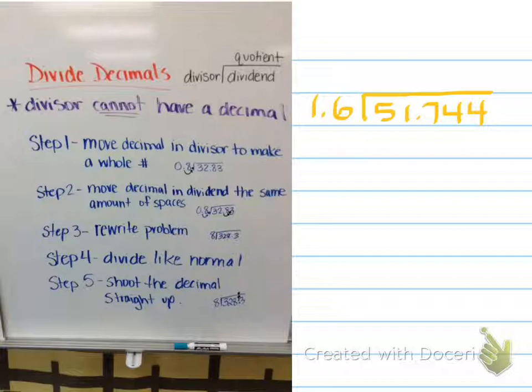All right. So now we're going to do an example. So if you want to put this example on your paper here, we're going to do 51.744 divided by 1.6. We're going to do step one where it says to move the decimal and the divisor to make it a whole number. So if I'm moving it one place here, I need to do the same thing inside. That's my step number two.